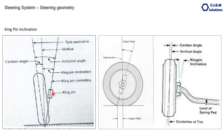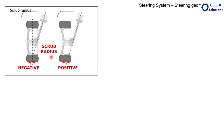Incorrect kingpin inclination leads to premature tyre wear and hard steering. The fourth parameter is called the scrub radius.